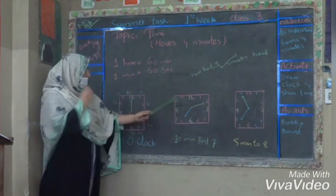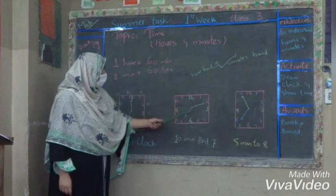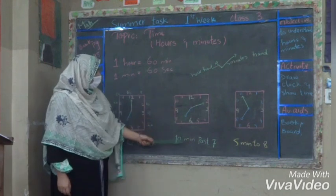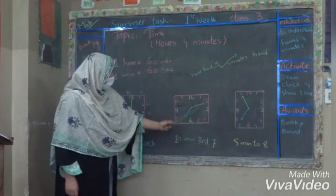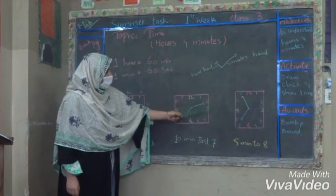In the next clock, you can see the big hand is on 2 and the small hand is on 7. It means 10 minutes past 7. As we know there are 5 minutes in each digit.